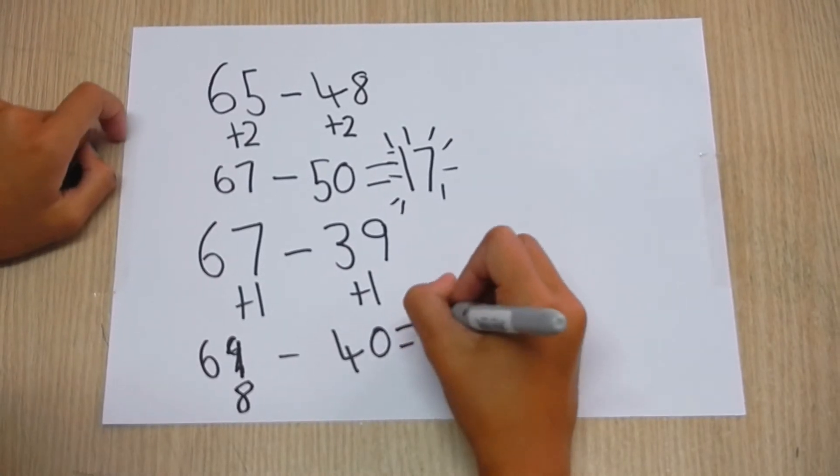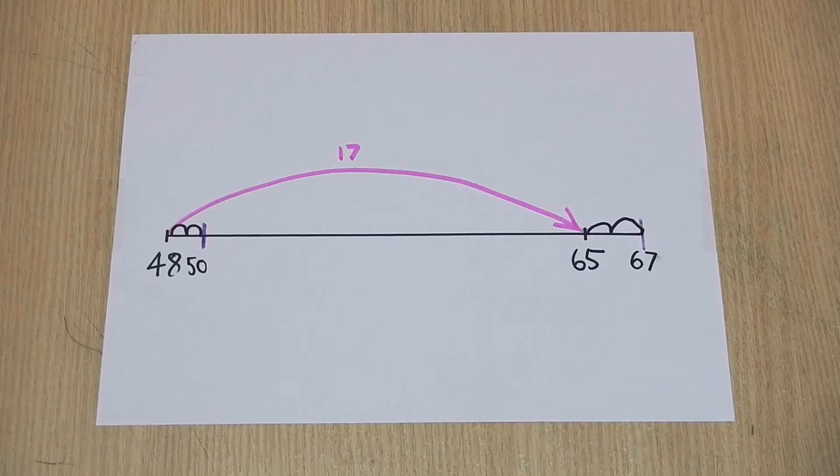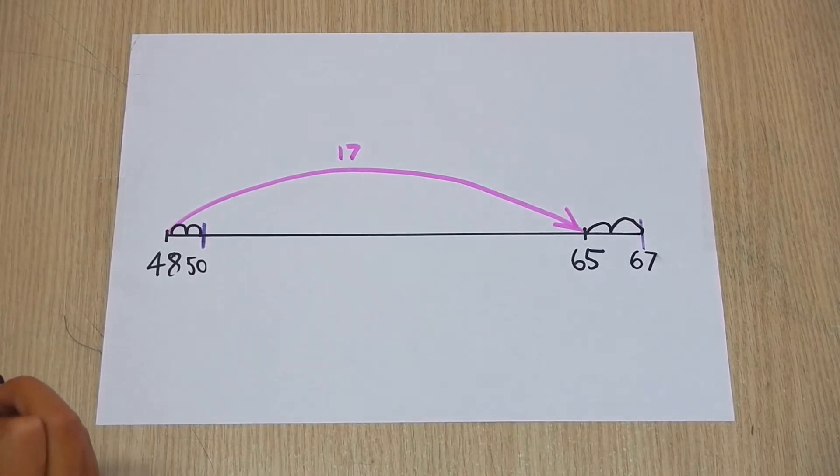That is how you add to subtract. Let's see what that looks like on a number line.